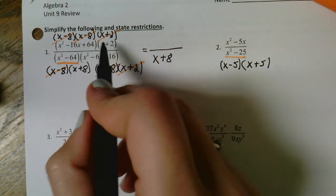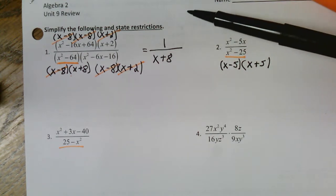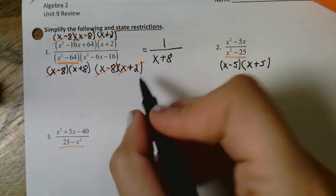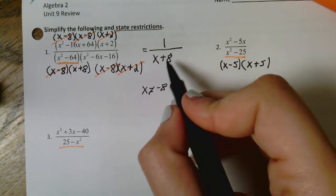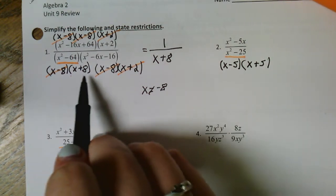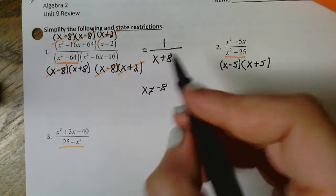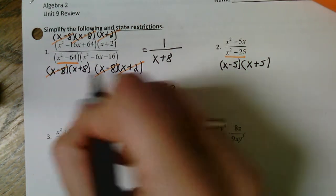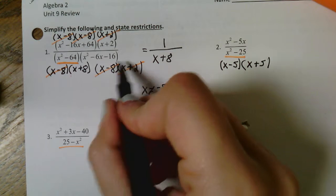That only leaves me with this piece right here. That piece is on the bottom, so keep that in mind — when I have that piece left over it has to go on the bottom. But everything on the top got eliminated, which means it's just going to be one over that remaining factor. A couple of things to pay attention to: they are asking you to state any restrictions. So x cannot equal negative eight — that makes sense because plugging in negative eight gives zero in the denominator.